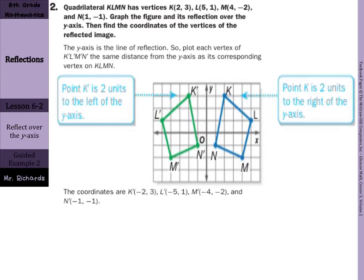In this next guided example, quadrilateral KLMN has vertices K(2, 3), L(5, 1), M(4, negative 2), and N(1, negative 1). Graph the figure and its reflection over the y-axis, then find the coordinates of the vertices of the reflected image. Draw in your y-axis to remind yourself where you're going. K is 1, 2 away from the y-axis, so go 1, 2 away to the other side. L was 1, 2, 3, 4, 5 away, so the new point is 1, 2, 3, 4, 5 away. Do the same with M and N to get your new points.